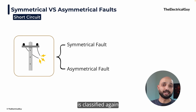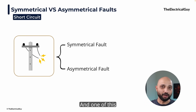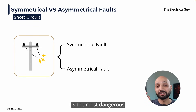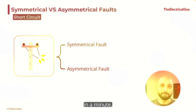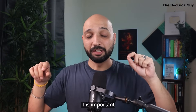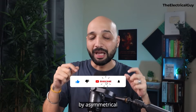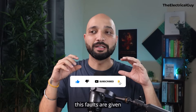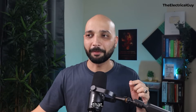The short circuit fault is classified again into two categories: the symmetrical fault and the asymmetrical fault. One of these is the most dangerous type of fault the power system can see. Before we go and understand which is the most severe, it is important that you understand this terminology — what do we mean by symmetrical, what do we mean by asymmetrical, and why the names of these faults are given as symmetrical and asymmetrical.